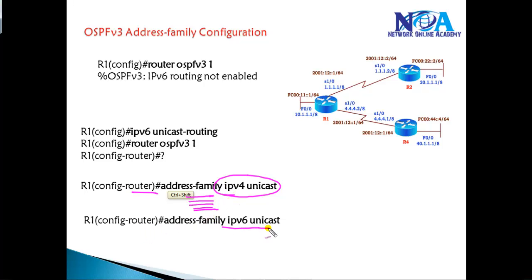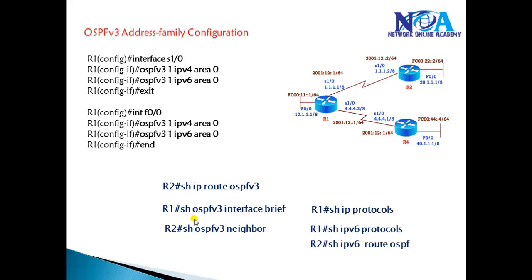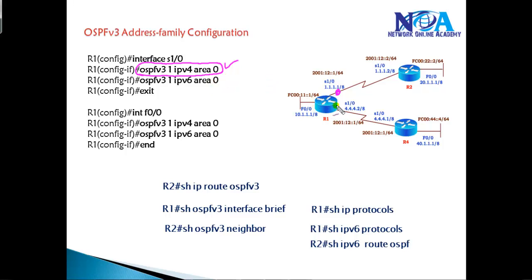For IPv6-specific configurations, you enter 'address-family ipv6'. There are no network commands here; instead, you go to the interface and enable the protocol there. To enable IPv4, use 'ospfv3 [process-id] ipv4 area [area]'. To enable IPv6, use 'ospfv3 [process-id] ipv6 area 0'.